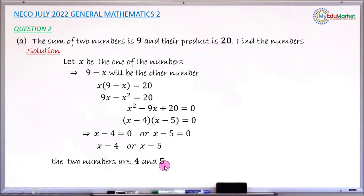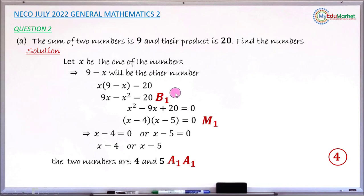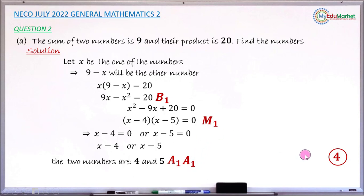Let me share how this question is marked in the 2022 marking scheme. The first mark is a bonus one mark for writing the correct quadratic equation: 9x minus x squared equals 20. Correctly factorizing it to (x minus 4)(x minus 5) earns one method mark. For each correct answer — 4 and 5 — there is one accuracy mark each. In total, this question has four marks.